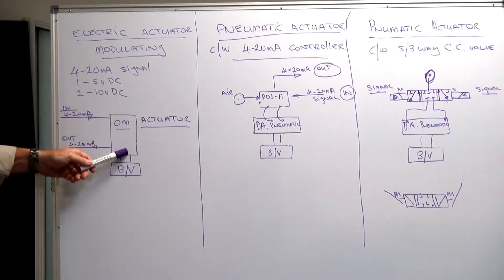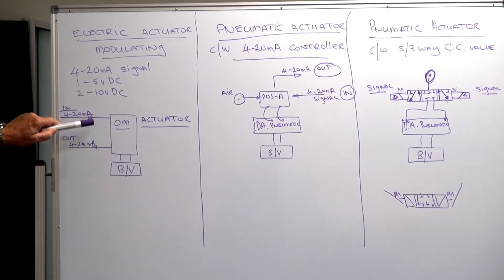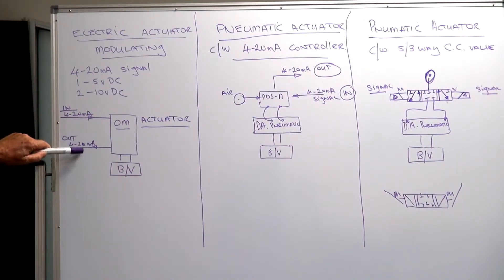At the same time it will give an output signal that will give a 4 to 20 milliamp to feed back to your PLC. This will confirm to the PLC the actual positioning of the ball valve in relationship to the input signal. It's a servo loop feedback to the unit.